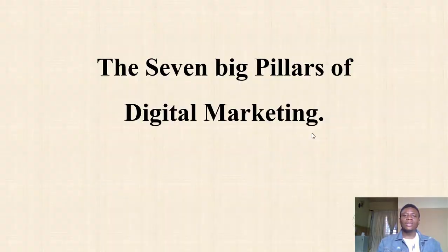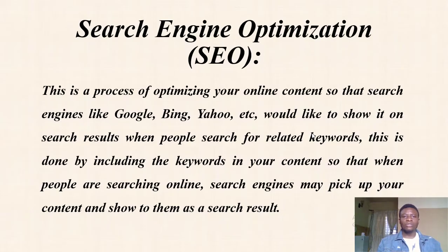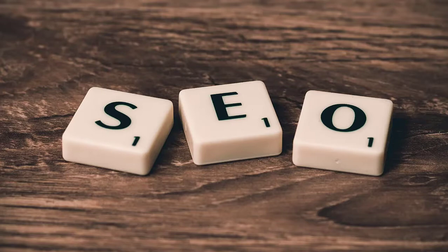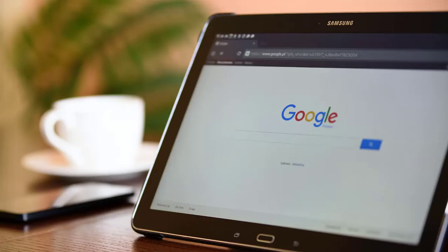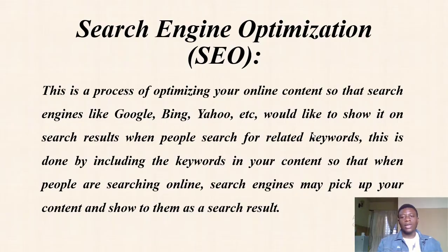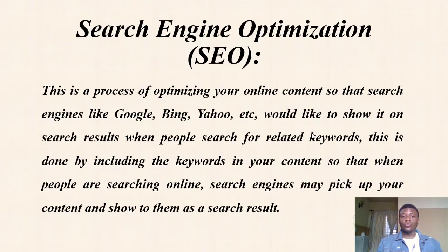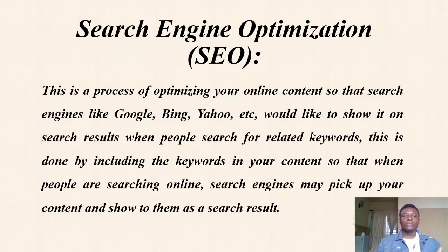But there are seven big pillars of digital marketing, one of which is search engine optimization or SEO. This is a process of optimizing your online content so that search engines like Google, Bing, and Yahoo would like to show it on their search results when they search for related keywords. People use SEO to rank for particular keywords.